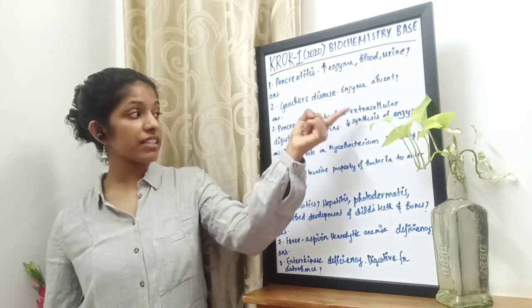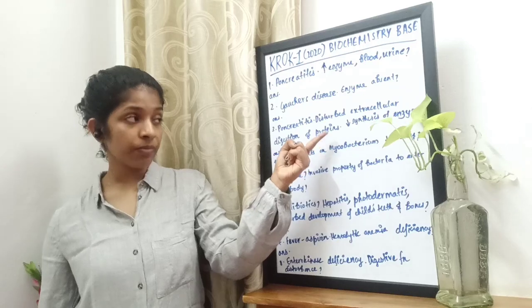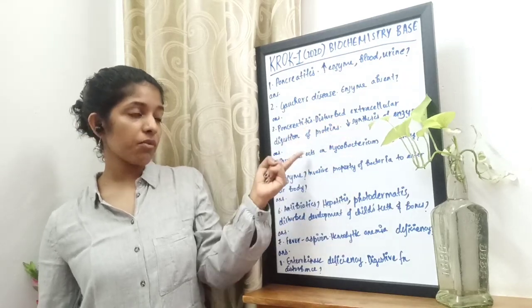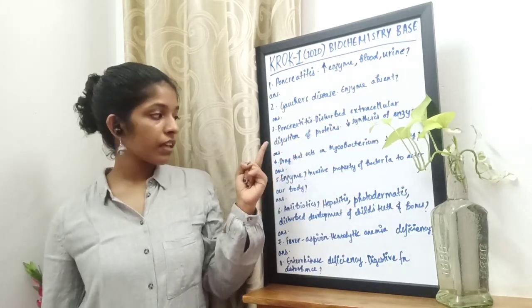The third question: a patient comes to you with pancreatitis and he has disturbed extracellular digestion of proteins. The decrease in which enzyme causes this? The answer is trypsin.